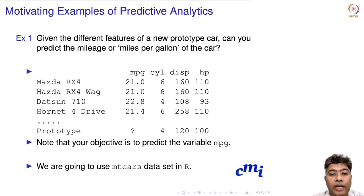Here is example data for a new prototype car. For example, the Mazda RX4 is a six-cylinder car with displacement 160 and horsepower 110. The Datsun 710 is a four-cylinder car with displacement 108, horsepower 93, and miles per gallon 22.8. Similarly, the Hornet Four Drive has miles per gallon 21.4, six cylinders, displacement 258, and horsepower 110.